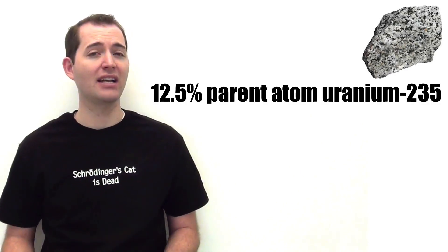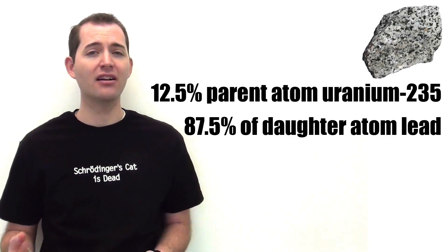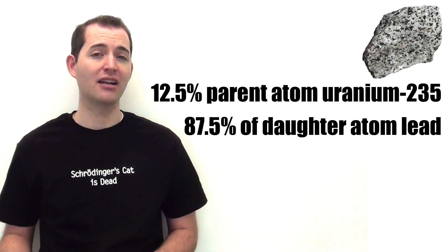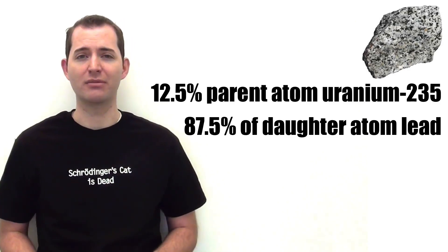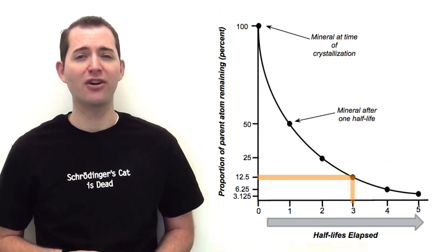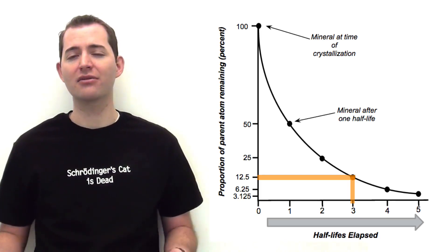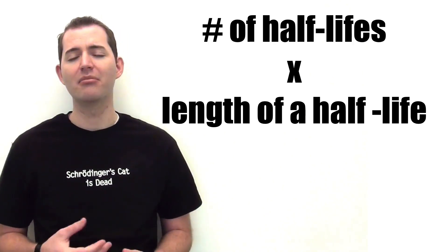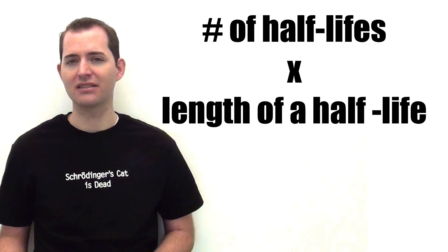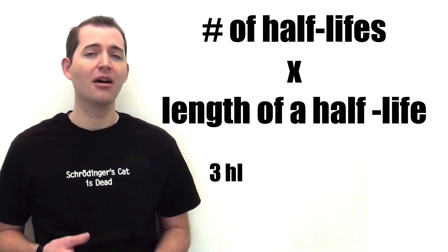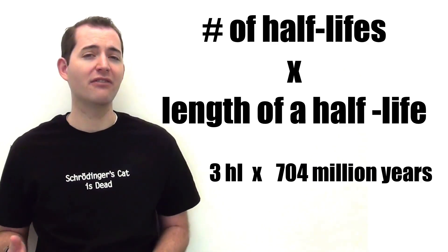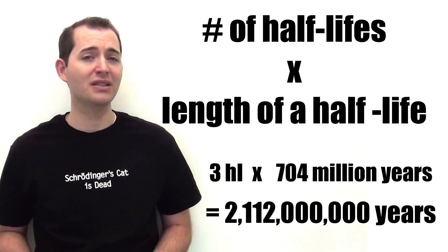For example, if we have a rock sample that contains a ratio of 12.5% of the parent atom uranium-235 and 87.5% of the daughter atom lead, we can determine how many half-lives have elapsed. Looking at our graph, a sample containing 12.5% of the parent atom has undergone three half-lives. We then multiply the number of half-lives — which is three — by the length of a half-life for uranium-235, which is 704 million years, to determine that this rock is over 2 billion years old. This is a simple example of how absolute or radiometric rock dating is used to determine the age of rocks, fossils, and other items.